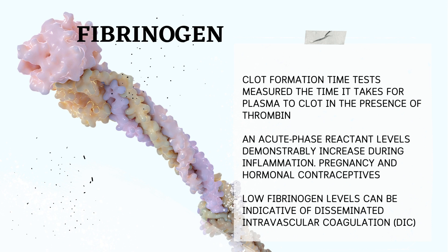Fibrinogen level assessment: traditionally, clot formation time tests measured the time it takes for plasma to clot in the presence of thrombin, a coagulation factor. However, more specific assays are now employed to measure fibrinogen concentration directly. Fibrin degradation products — remnants of fibrin breakdown — can also be measured to assess overall clotting activity. Fibrinogen is classified as an acute phase reactant, meaning its levels increase during inflammation. Pregnancy and hormonal contraceptives can also influence fibrinogen concentrations. Low fibrinogen levels can be indicative of disseminated intravascular coagulation (DIC), a condition characterized by widespread blood clot formation throughout the vasculature, which can lead to complications such as bleeding and organ damage.